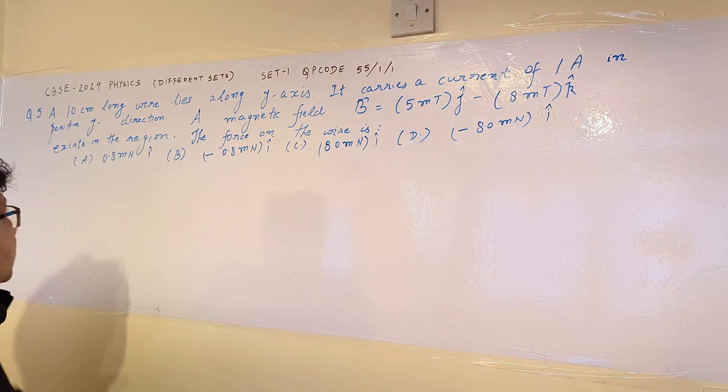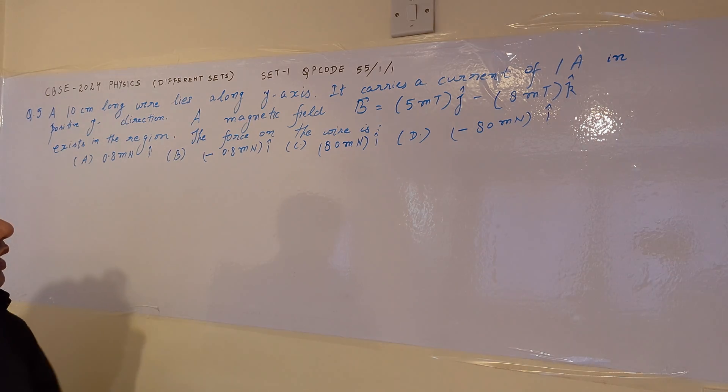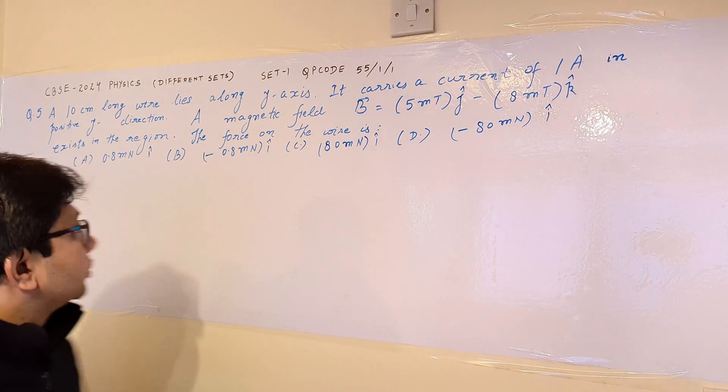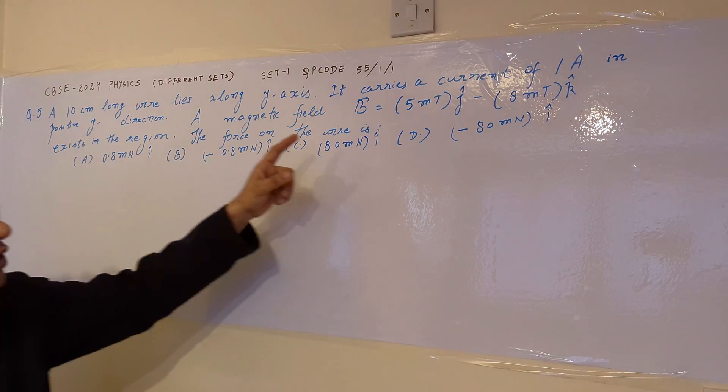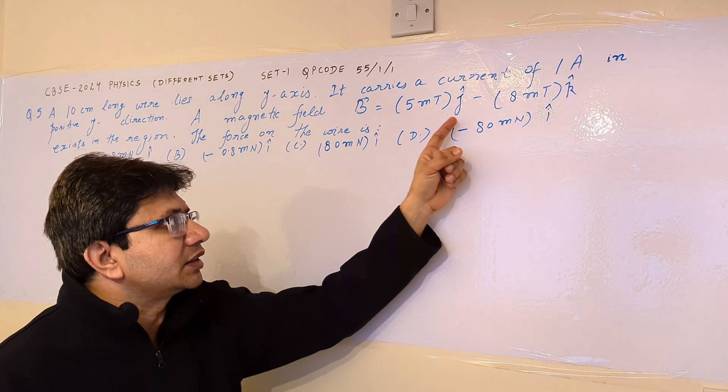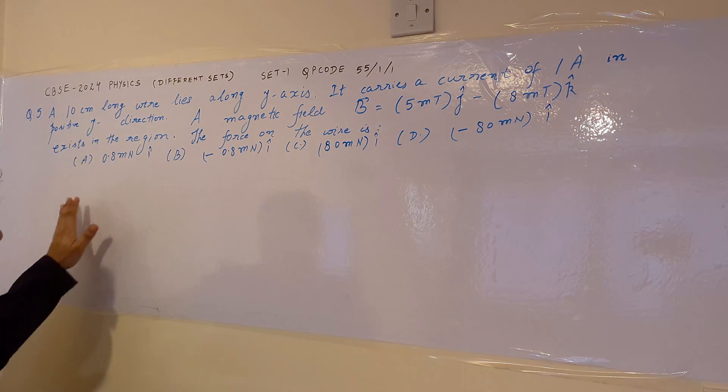Now I'm reading the question. A 10 centimeter long wire lies along the y-axis. It carries a current of 1 ampere in positive y direction. A magnetic field B equals 5 millitesla J cap minus 8 millitesla K cap exists in the region.